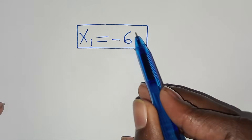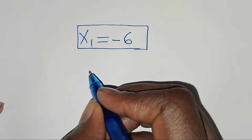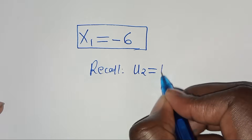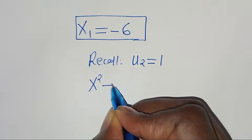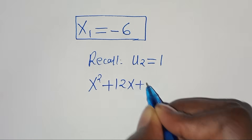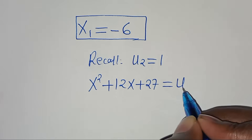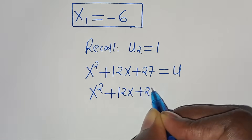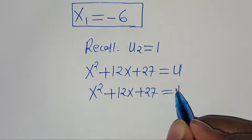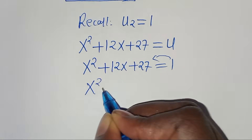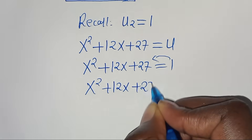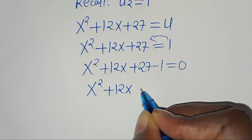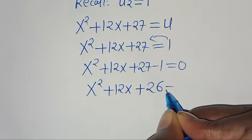Now using u₂ = 1 and recalling u = x² + 12x + 27, we substitute: x² + 12x + 27 = 1. Moving 1 to the left gives x² + 12x + 26 = 0. This is another quadratic equation.